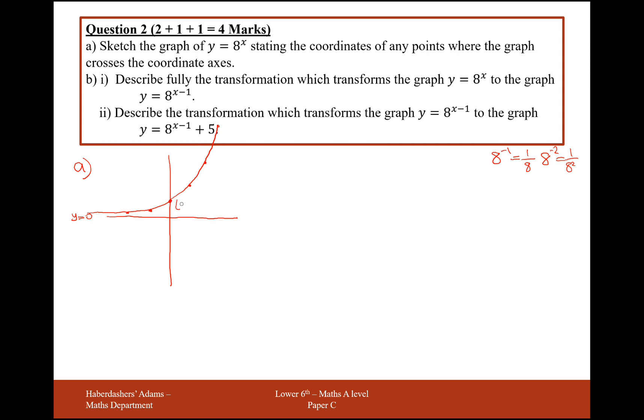Earlier I said when x was 0, we get the value 1, so we have a coordinate axis intersection here at (0, 1). That's the only axis intersection here. So we get a graph of y = 8^x.